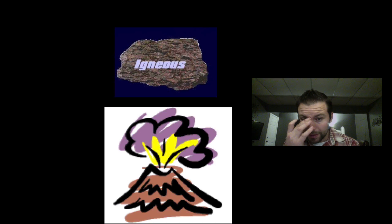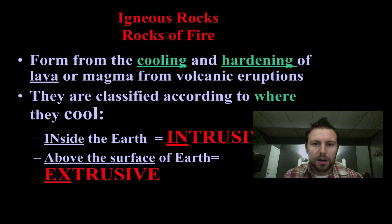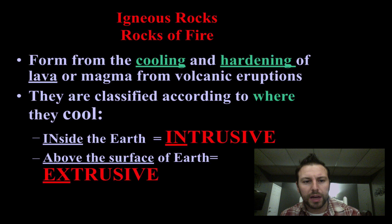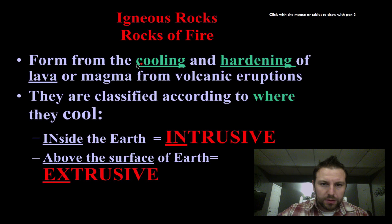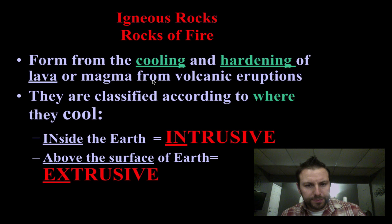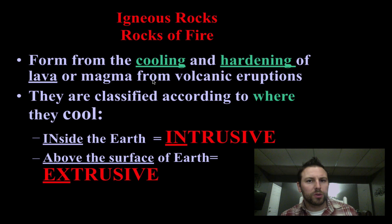Igneous rocks are rocks of fire — they form from molten material that eventually cools and hardens. The big thing to remember with igneous rocks is that they form from the cooling and hardening of lava or magma.